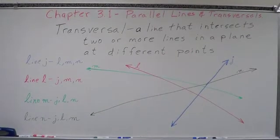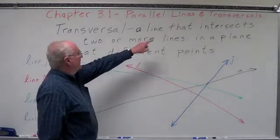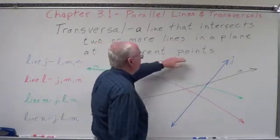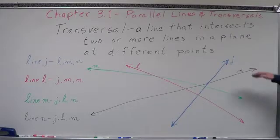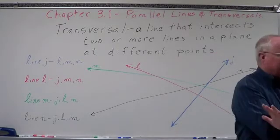Now we need to talk about something known as a transversal. A transversal is a line that intersects two or more lines in a plane at different points. That means it crosses two or more lines on the same flat surface at different points — they don't all cross at the same place.